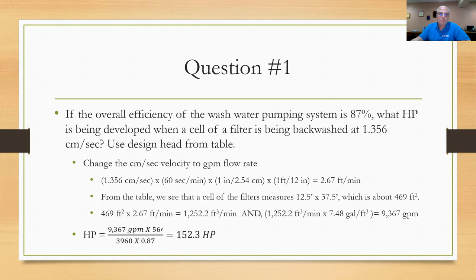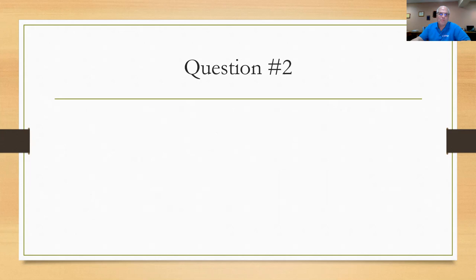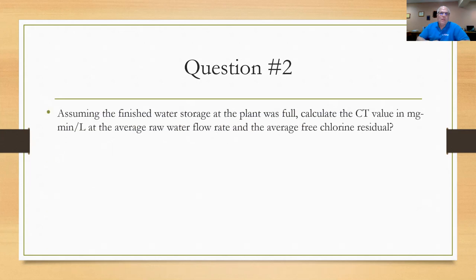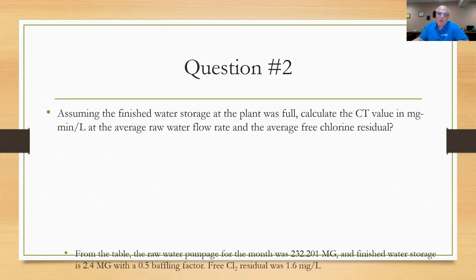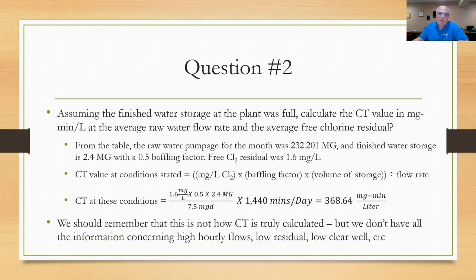Let's move on to question number two. Assuming that the finished water storage of the plant was full, you'll have to find that in the table, calculate the CT value in milligrams per minute per liter, milligram minutes per liter at the average flow rate and the average free chlorine residual. Now let me say right away, we've got to remember this is not how CT is truly calculated, but we don't have information from the plant about high hourly flows, low flows, low residual, low chlorine levels, that kind of thing. So I'm going to do the best I can with what I have.